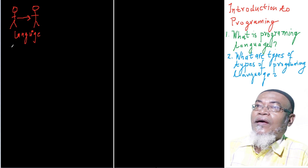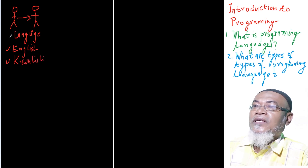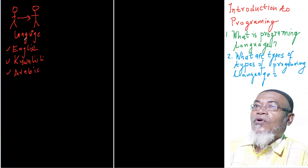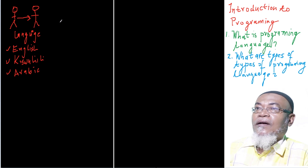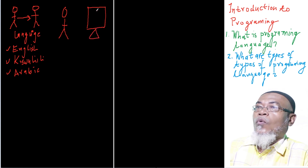This particular language must be understood by both people for them to communicate. For example, if they want to communicate in English, both subjects must understand English. If they want to communicate in Kiswahili, both must understand Kiswahili. And if you are coming from the Middle East, then both of you must understand Arabic for the two of you to communicate.